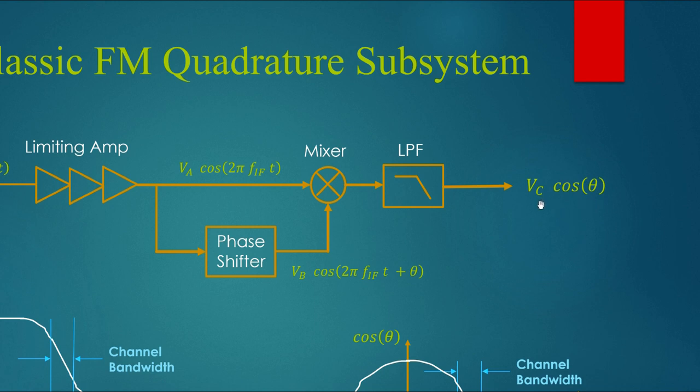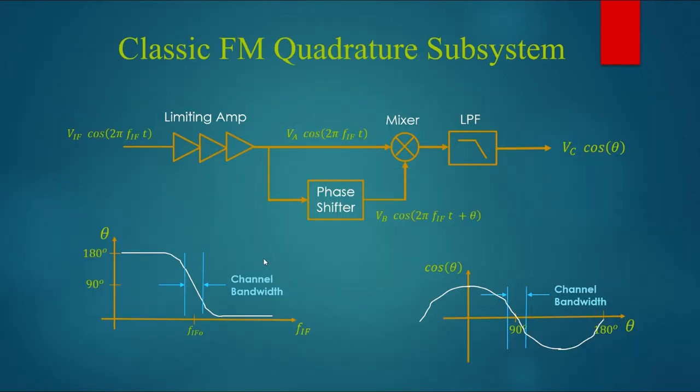V_C is just the amplitude of it. Remember, these are fixed amplitudes here, so this is some fixed amplitude. The information is contained in this cosine theta, which is going to vary as the frequency F_IF is varying. Remember, it's moving back and forth, lower to higher, lower to higher, to represent the modulation. Now to understand what happens next, we need to talk about how the phase angle varies with frequency based on this phase shifter network.